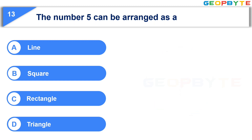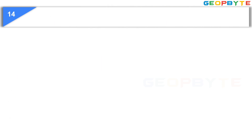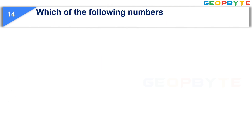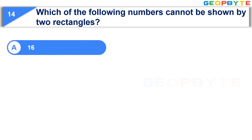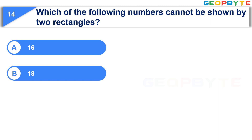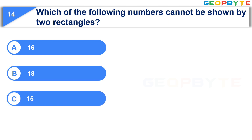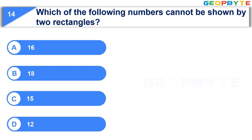Your time is up and the correct answer is Option A: Line. The next question is: Which of the following numbers cannot be shown by two rectangles? Option A: 16. Option B: 18. Option C: 15. Option D: 12. Your time starts now.